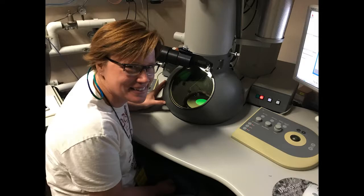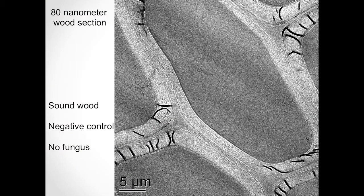Next up, I'm going to show you a few preliminary images of my TEM. Starting here, we have just a plant cell wall with no fungus — this is an 80 nanometer section. You can see our middle lamella and secondary and primary plant cell walls. The wood here looks good; it is intact.